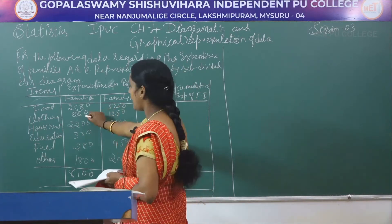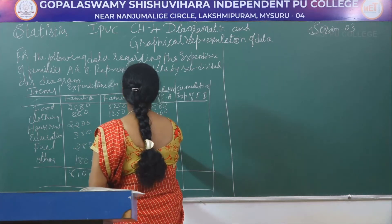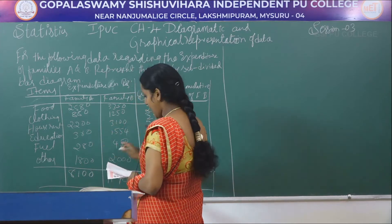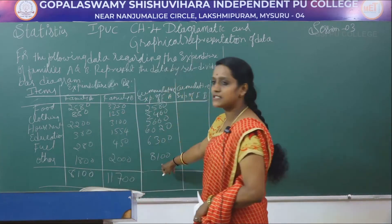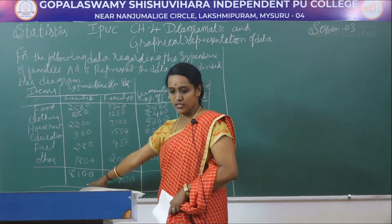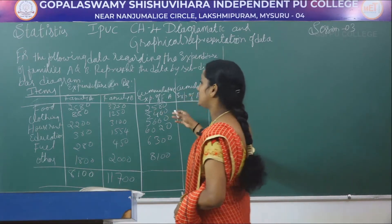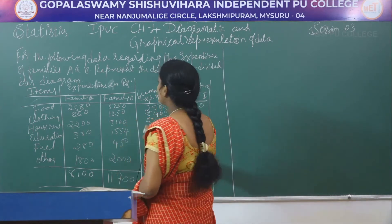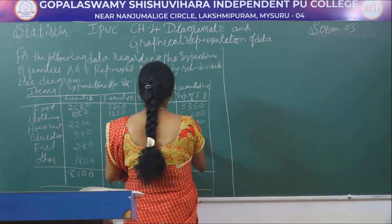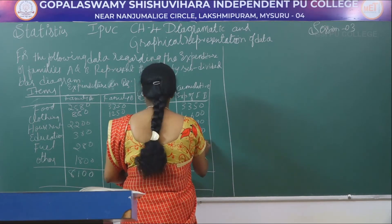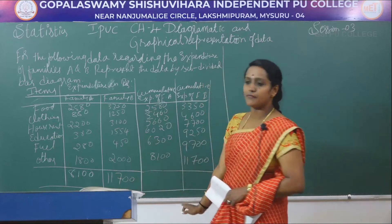For family A, the cumulative expenditure values are: 2,580; then adding 880 gives 3,460; then adding 2,200 gives 5,660; next 6,020; 6,300; and 8,100. The last value is 8,100. For family B, the cumulative expenditure values are: 3,350; 4,600; 7,700; 9,250; 9,700; and 11,700. The last two values will be the same as the total.